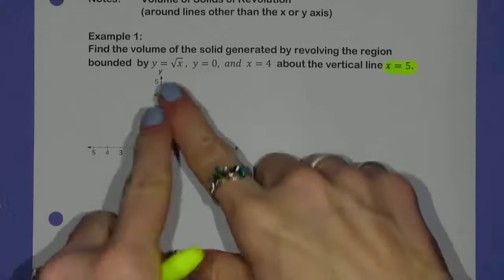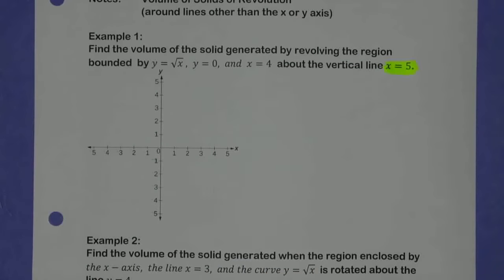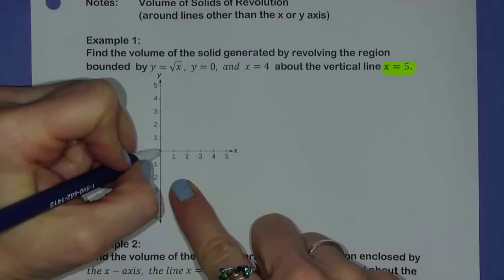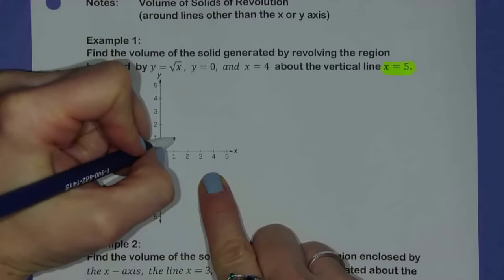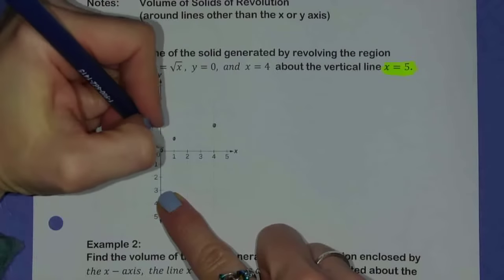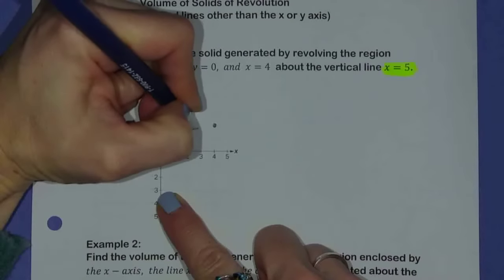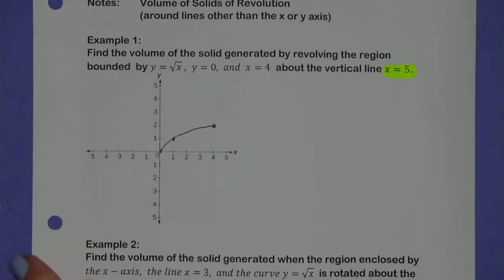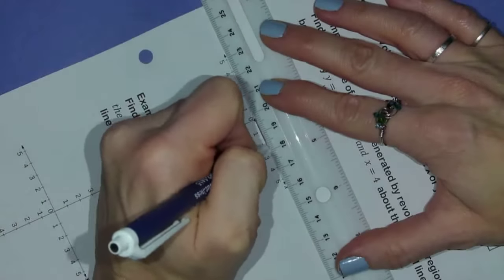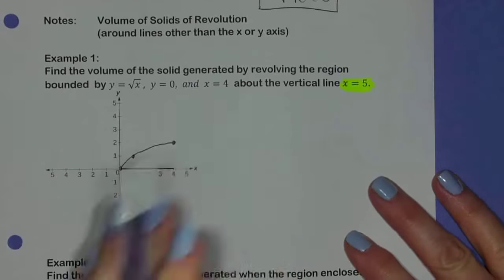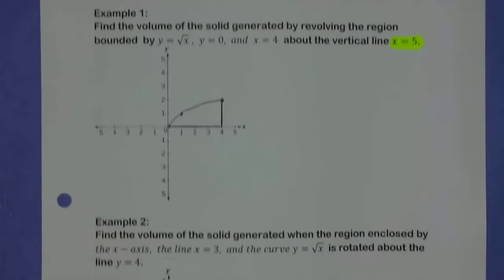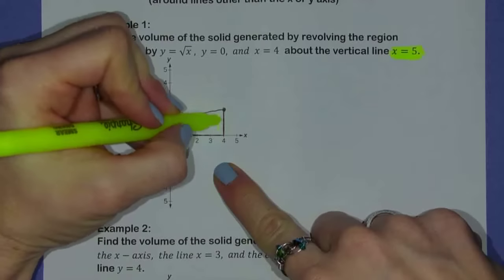Let's start like we always do, just by graphing our region. If I graph y equals root x — I know what that looks like by now. I have (0,0), the square root of one is one, and the square root of four is two. Then y equals zero is just the horizontal line over the x-axis, and x equals four is the vertical line at x equals four. So it looks like this is the region bounded between those three items.